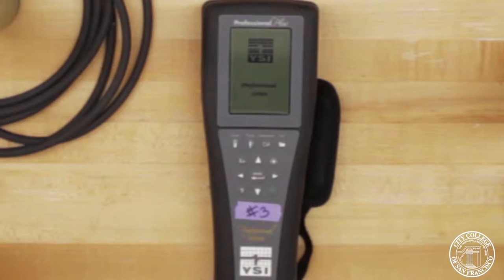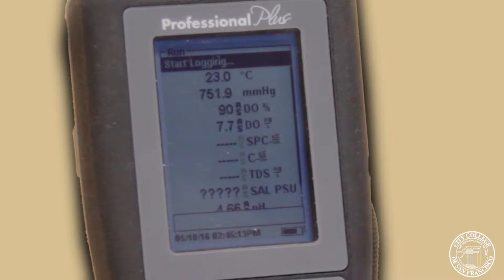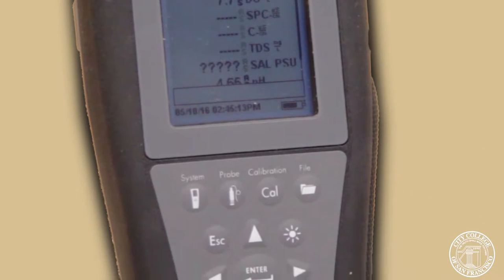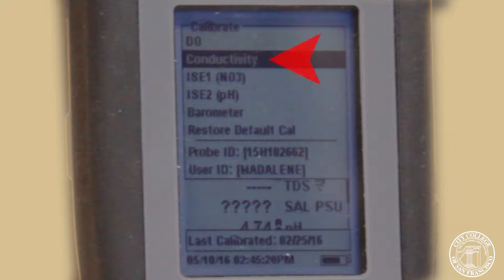Now we can power up the YSI meter. It will give us the run menu. And we want to calibrate. Press calibrate. It will give us a menu and we want to select conductivity.